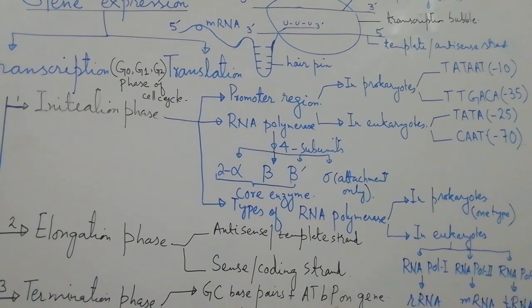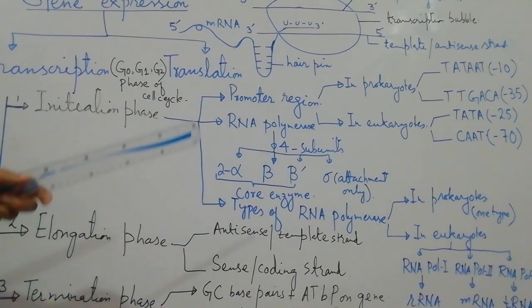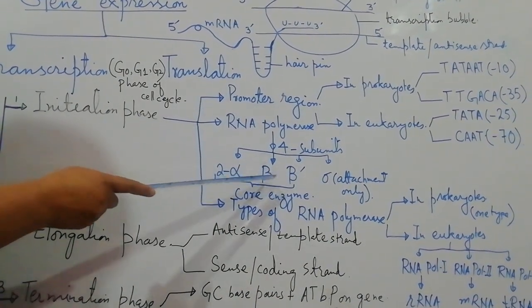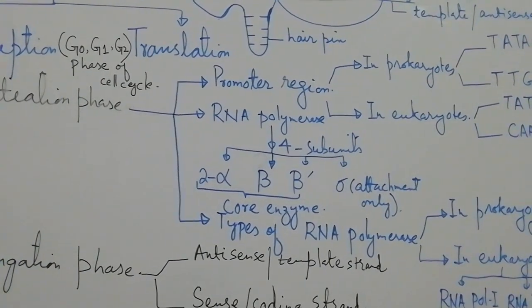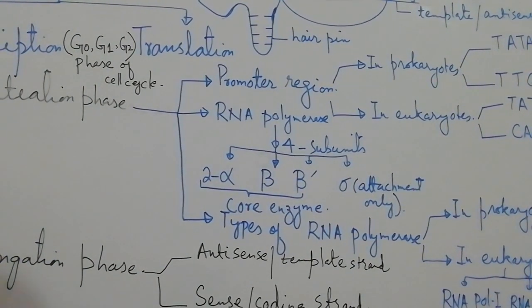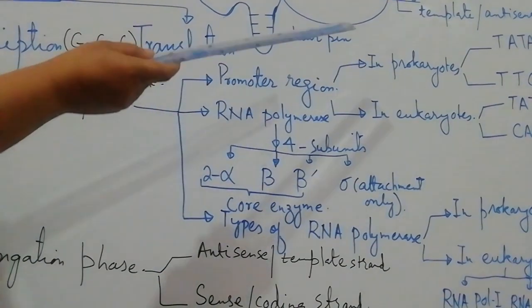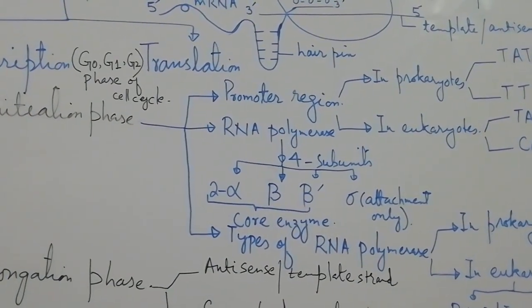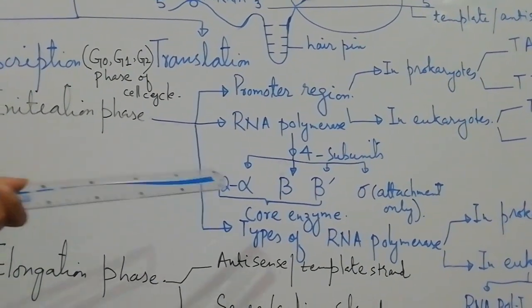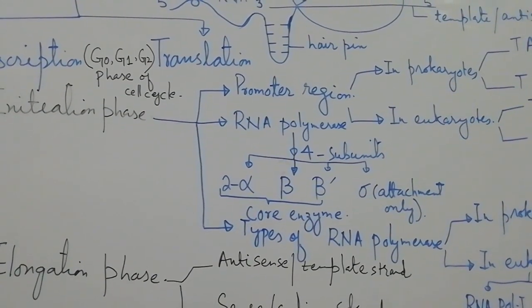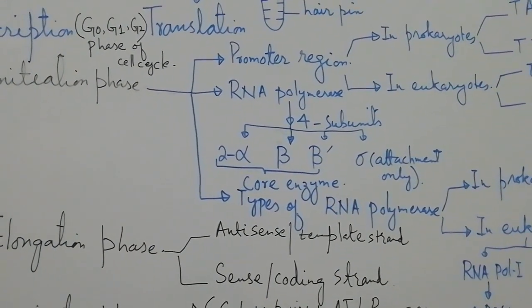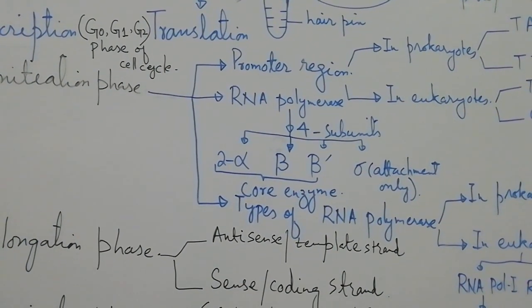RNA polymerase consists of four subunits: two alpha subunits, one beta, one beta prime, and a fourth called the sigma factor. The first three subunits — alpha, beta, and beta prime — are called the core enzyme. The sigma factor is only used for the attachment of RNA polymerase to the binding site, while the core enzyme subunits carry out the polymerization to make messenger RNA.